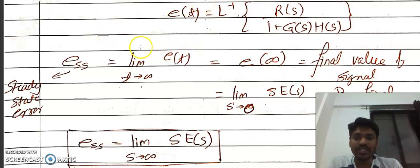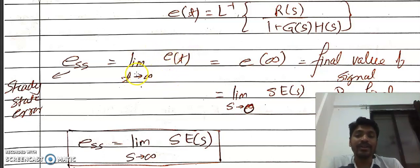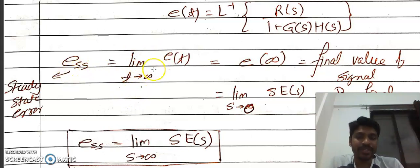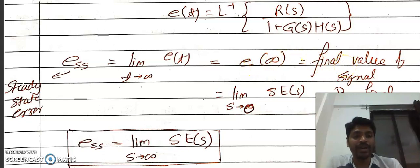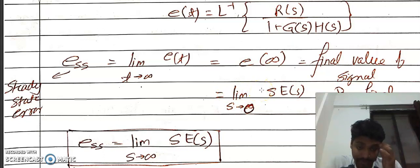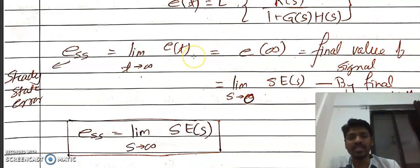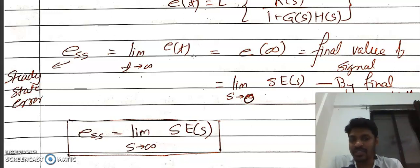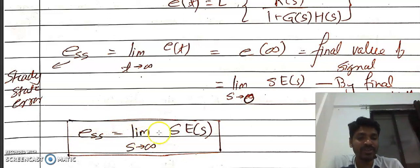We want E(∞) — the value of the error signal when the system is at steady state. By the final value theorem in Laplace transform, E_SS = limit as S tends to 0 of S·E(S). Since we have the transfer function in the S domain, we use this formula: E_SS = lim(S→0) S·E(S). This makes the calculation simple and easy, and we will use this going forward.